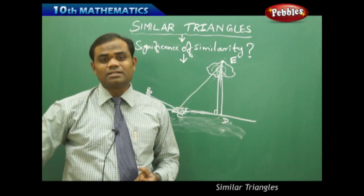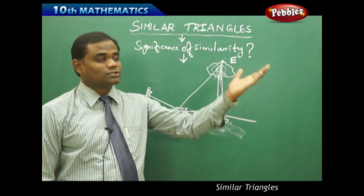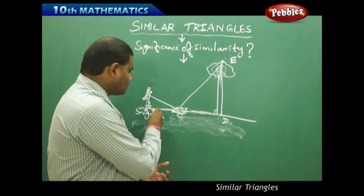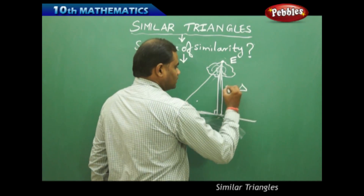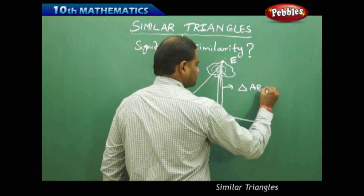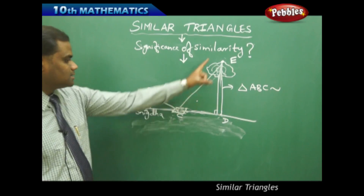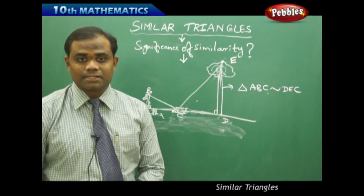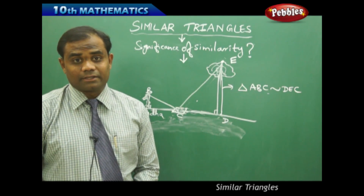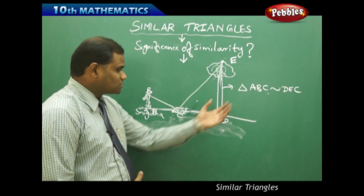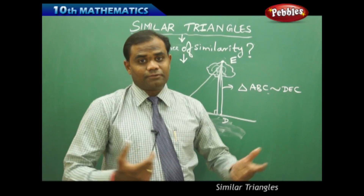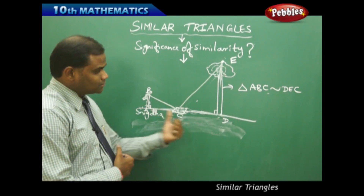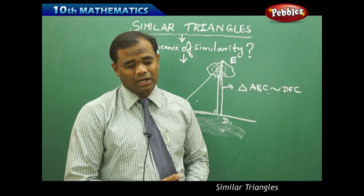Because the triangles are similar, we can find the height of the tree indirectly using the height of the girl. The height of the girl can easily be measured with a tape, but the height of a very tall tree is not easy to measure that way. So the concept of similar triangles — triangle ABC similar to triangle CED — is what is very useful in connecting similarity with real life.